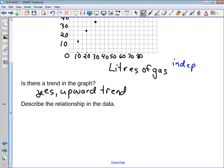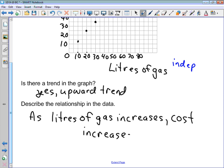And now we're asked to describe the relationship in the data. We always want to talk about, when we're describing relationships, what the independent variable or the thing on the bottom is doing, and then talk about how the dependent variable responds to that. So as we go from left to right, our independent variable is always increasing. So we almost always start off with, as whatever our independent variable is, so as liters of gas increases, what is cost doing? Well, cost is increasing. So as liters of gas increases, cost increases. And there we've described the trend.